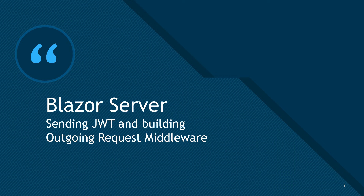In this episode I'm going to talk about how you can send JSON web tokens to your API from your Blazor server application, and how you can build a middleware for your outgoing requests. I know it sounds difficult but it's very easy — let's see why we should do it.